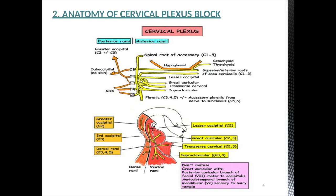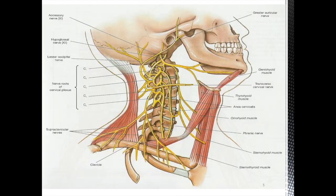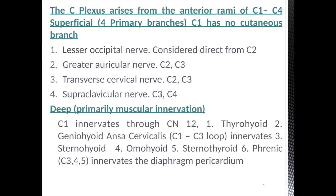There are four cutaneous nerves and six muscular deep nerves which supply the important muscles of the neck from this plexus. We have four cutaneous nerves from C1 to C4, but C1 has no cutaneous branch. So all four cutaneous nerves are derived from C2, C3, and C4. The first nerve is the lesser occipital, considered a direct branch from C2, though some authorities say C3 fibers also supply this nerve.